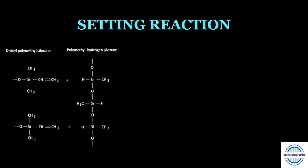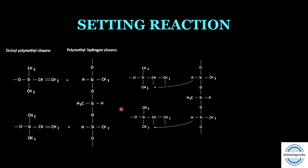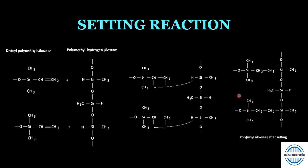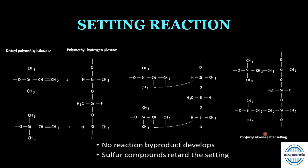Setting reaction of addition silicone: the two siloxane groups — divinylpolymethyl siloxane and polymethylhydrogen siloxane — combine in the presence of the platinum salt catalyst. Addition polymerization occurs: hydrogen from polymethylhydrogen siloxane moves to the vinyl groups of divinylpolymethyl siloxane, forming a three-dimensional network of polyvinyl siloxane. No reaction byproducts are released. Very importantly, sulfur compounds retard the setting of addition silicone.